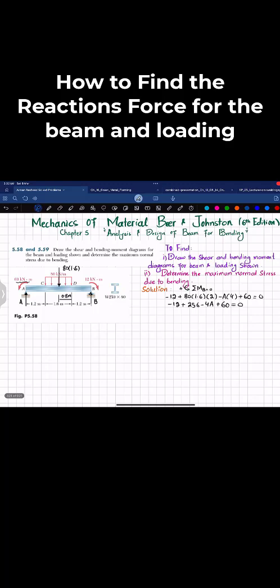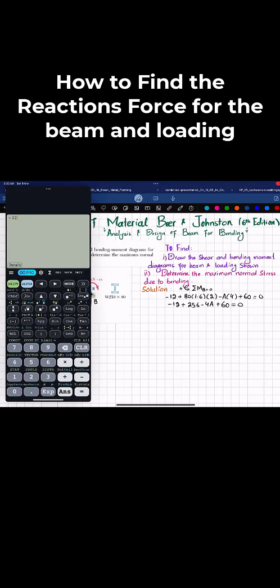Minus 12 plus 256 plus 60 gives you 304, and that equals 4A. From here, A equals 304 divided by 4, which gives you 76 kilonewtons.